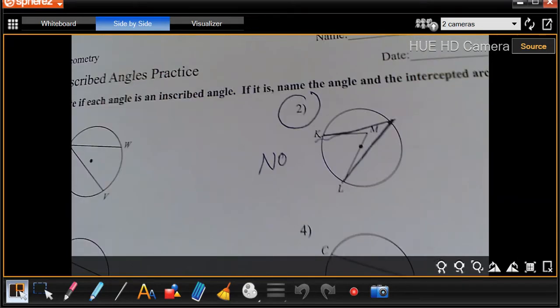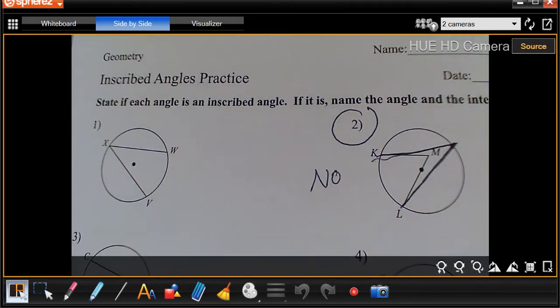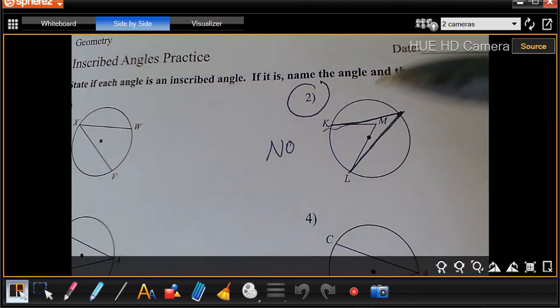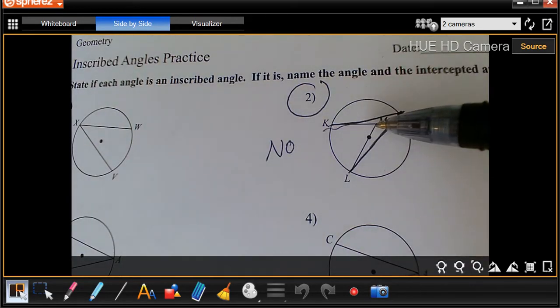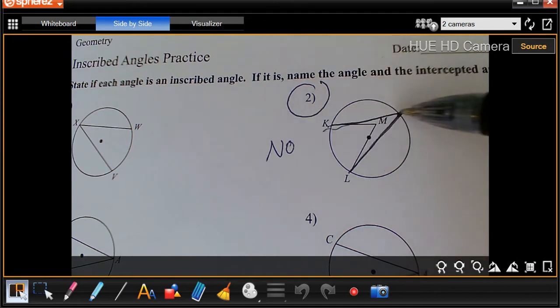We're looking at the inscribed angles practice. This might be a little bit different than yours. We're going to start with number two. Number two is not an inscribed angle because it does not go all the way to the other side.